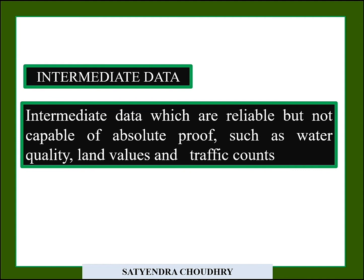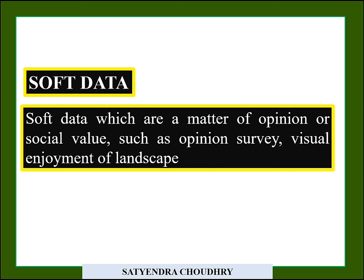Intermediate data come from a trustable, reliable source but are not capable of absolute proof, such as water quality in a given area, land values, and traffic count for a particular area.